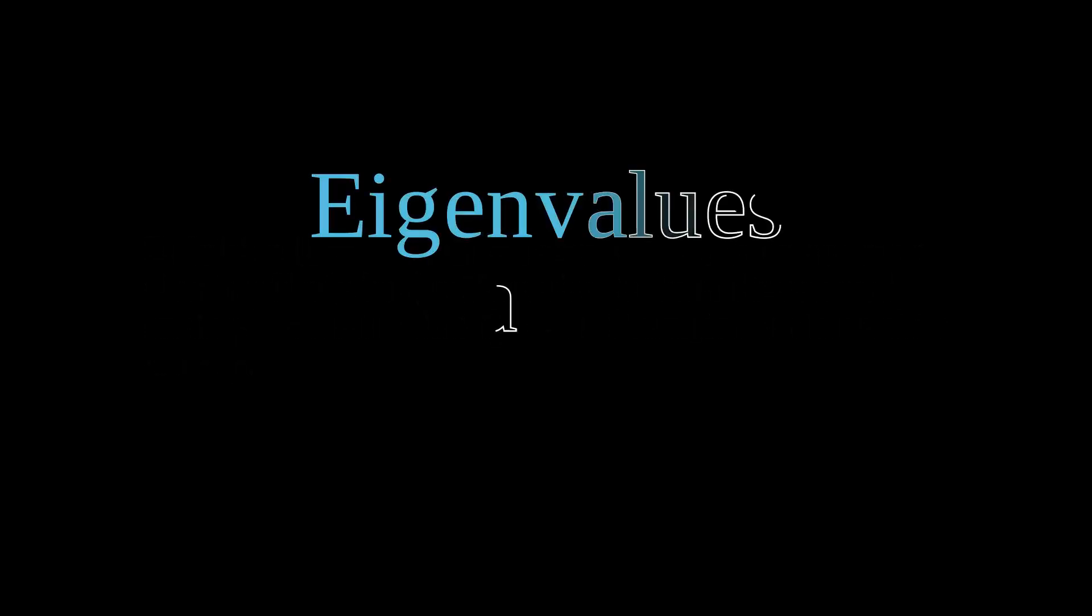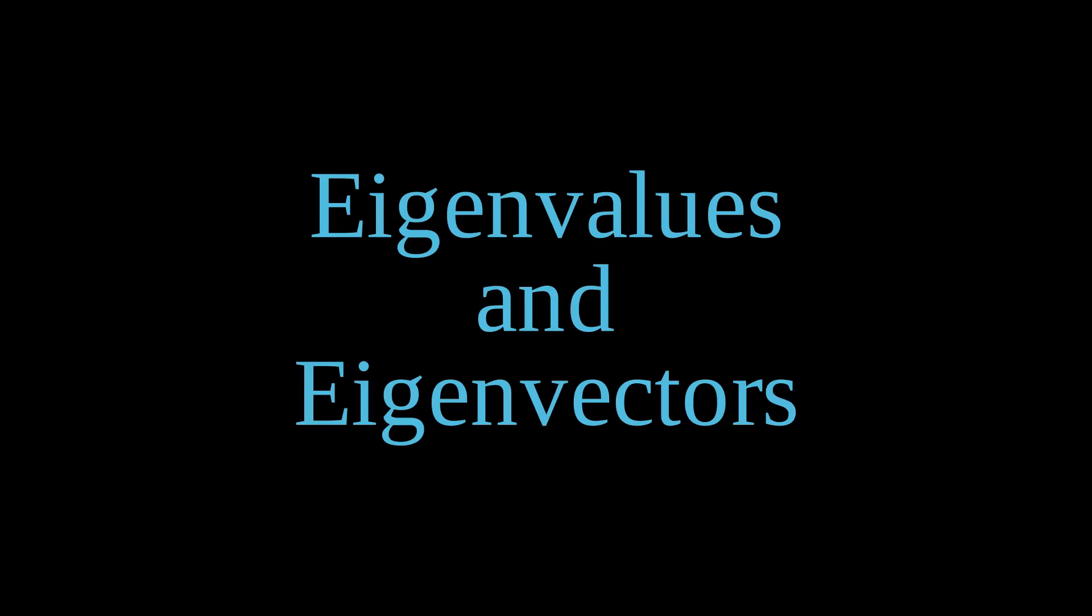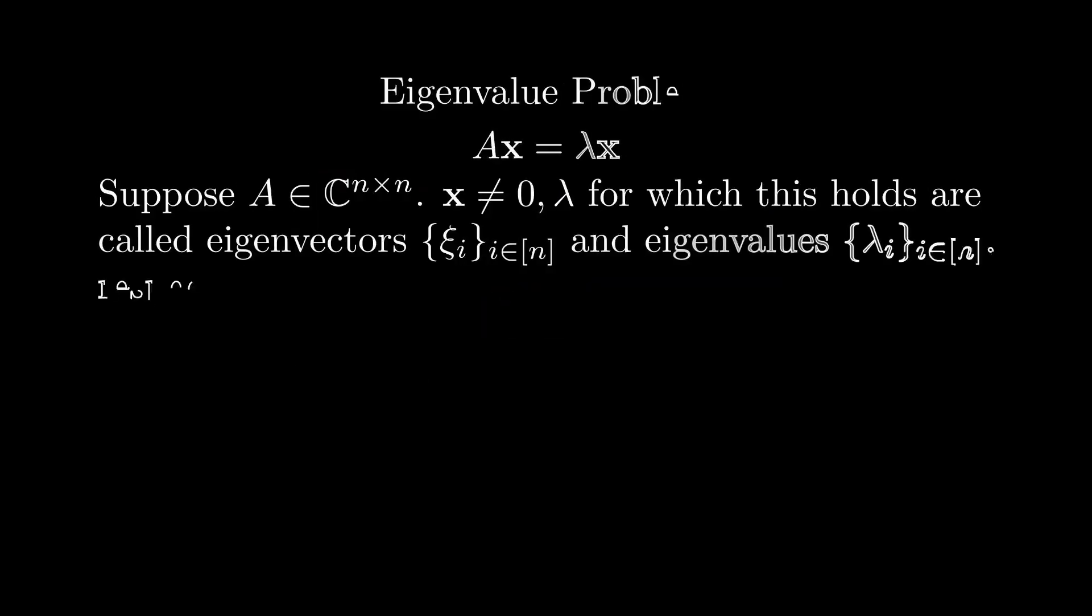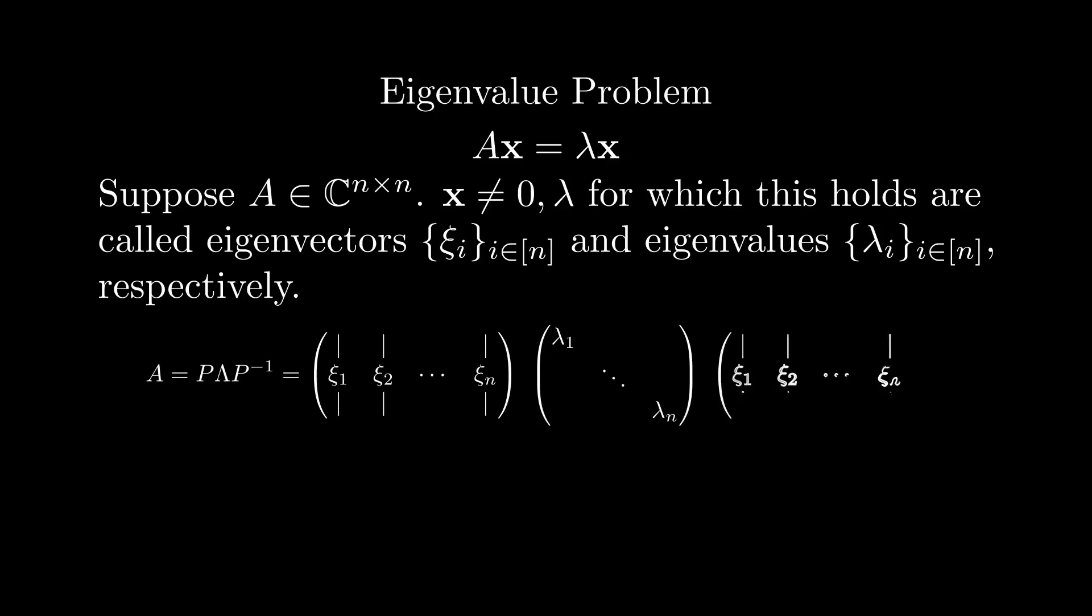If you've ever taken a linear algebra course, you're probably familiar with the notion of eigenvalues and eigenvectors. Essentially, the idea is that we are interested in the values of X and lambda for X not equal to 0 that the following statement holds, where A is some linear operator, which in finite-dimensional spaces is just a matrix. If a matrix is diagonalizable, we can decompose it into three operations, wherein we first change the basis from the standard basis to the eigenbasis, scale each eigenvector accordingly via this diagonal matrix, and then transform back into the standard basis.